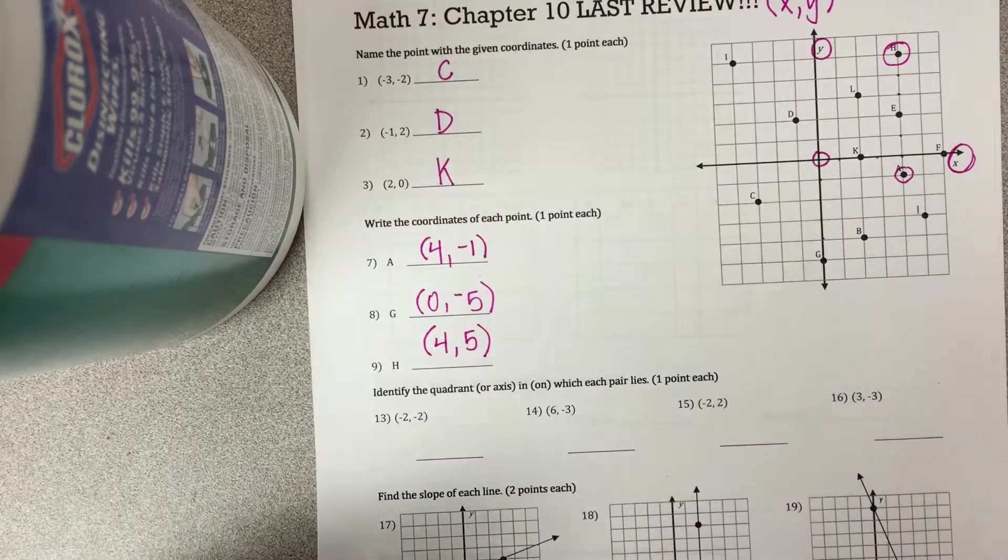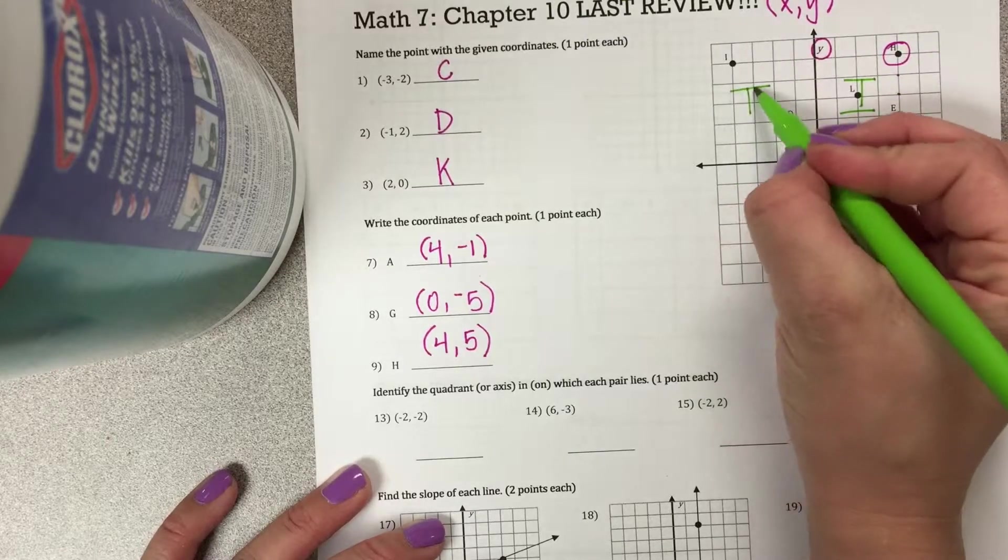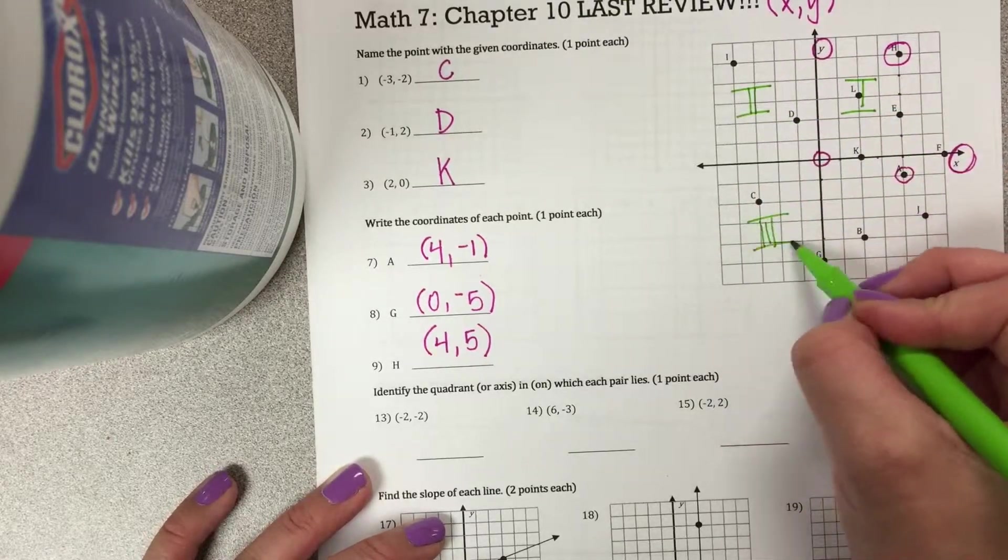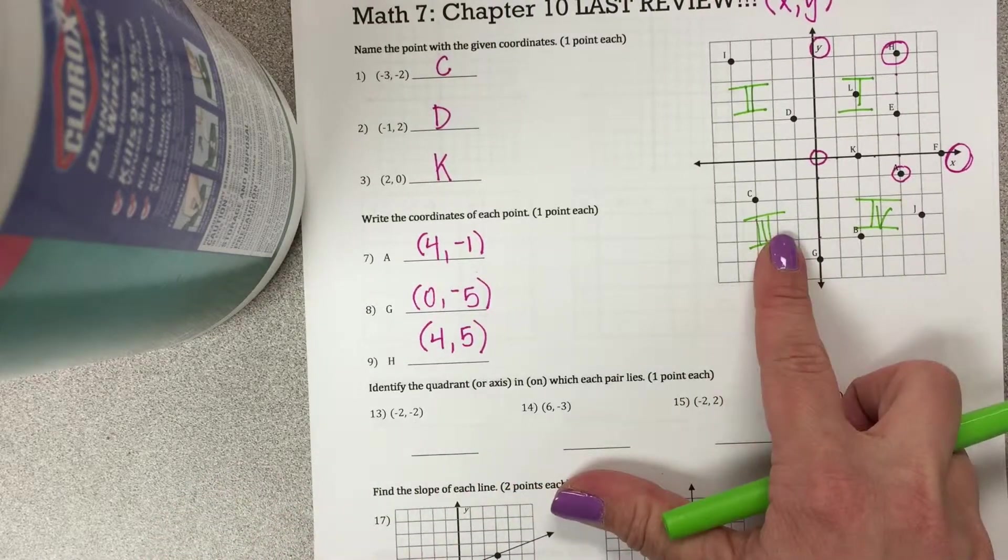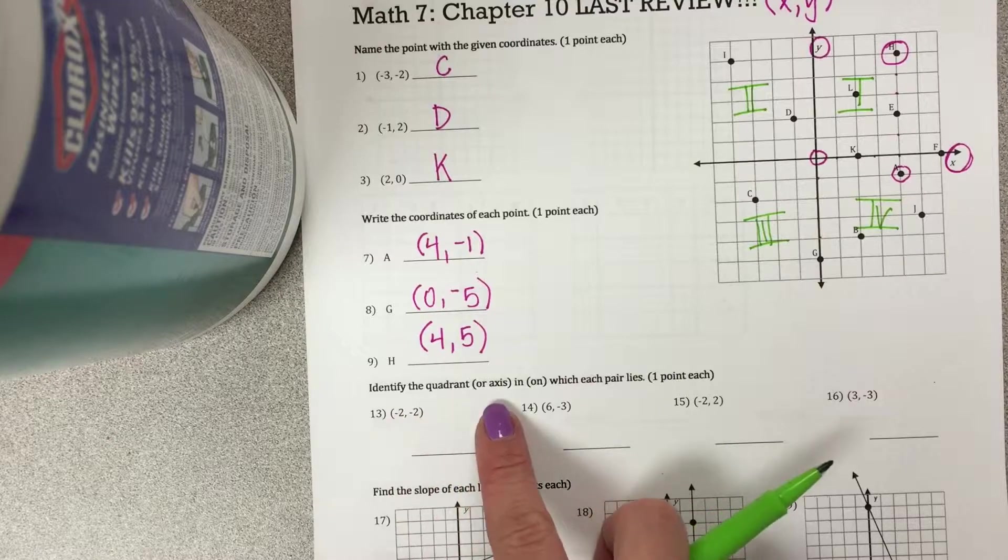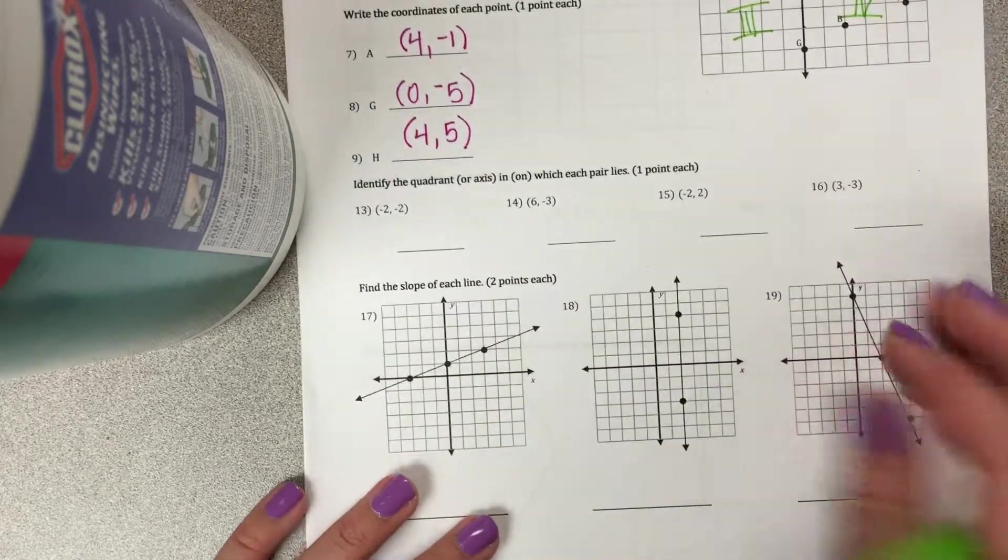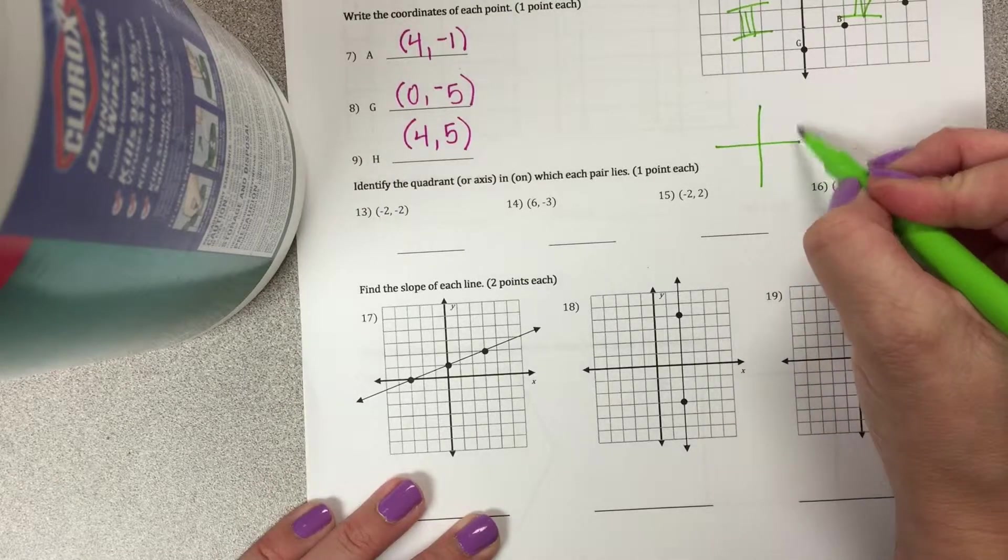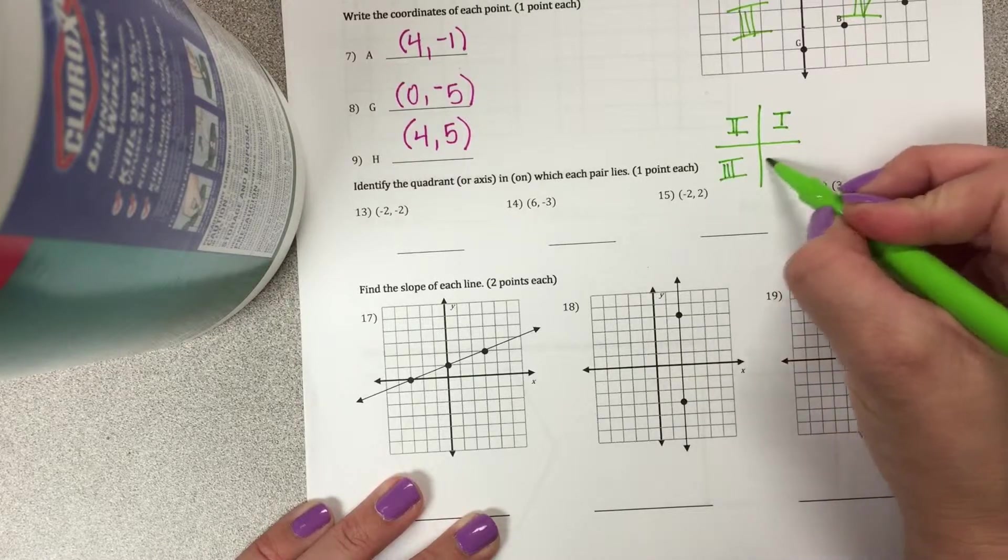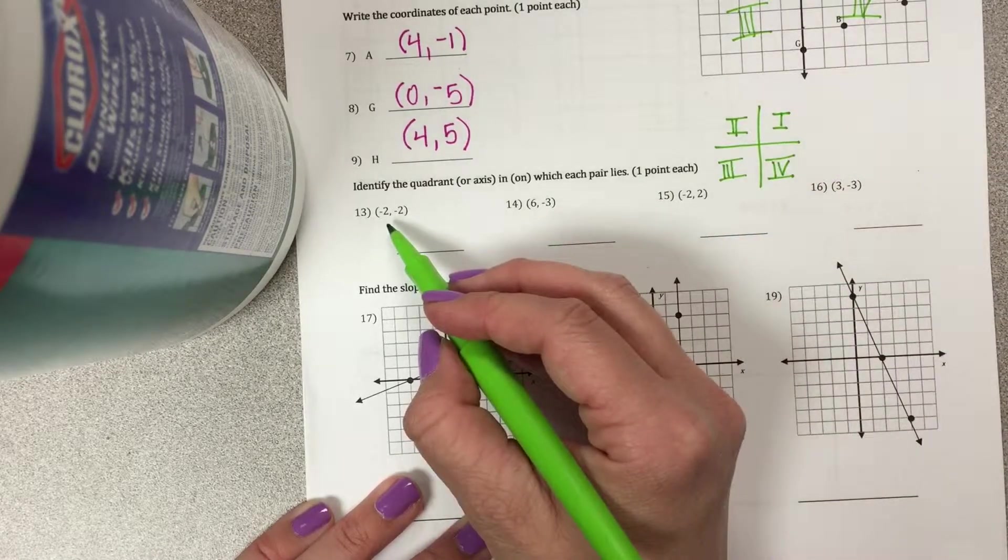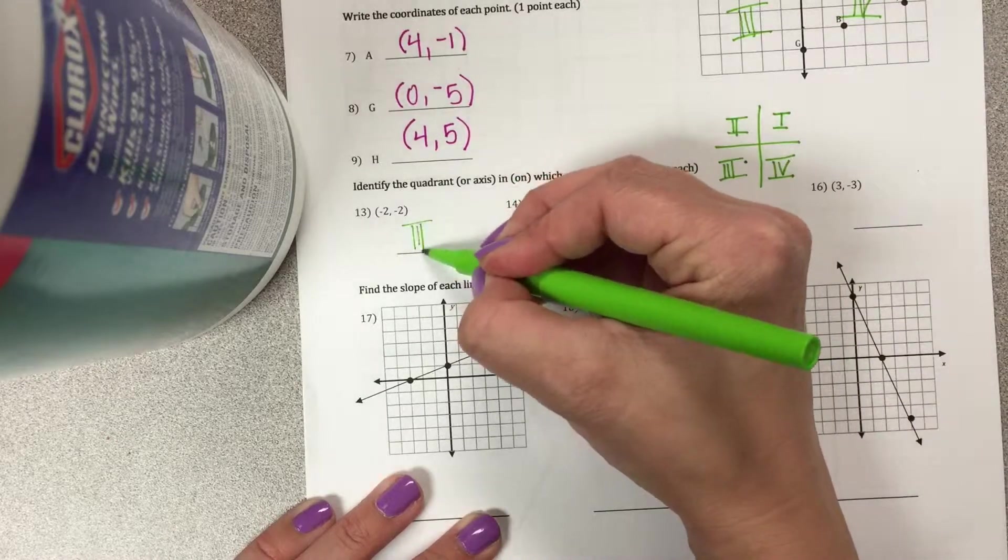The next section is about quadrants. The quadrants go 1, 2, 3, 4. So these are just hypothetical points, they're not up here. It's like identify the quadrant or the axis in which each pair lies. So I'm actually going to draw a separate little one down here so it's easier to see. So 1, 2, 3, and 4. So negative 2, negative 2 would be negative, negative, quadrant 3.